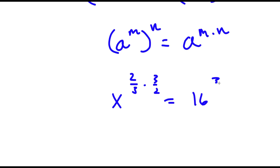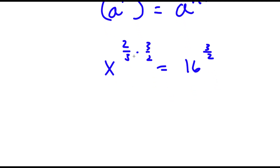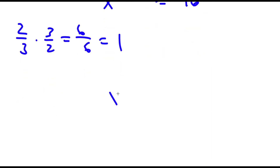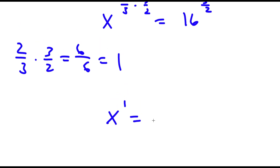This is equal to 16 to the power of 3 over 2. Now 2 thirds and 3 over 2, these two are reciprocals, meaning if we multiplied them we would get 1, because if you multiply two reciprocals you get 1. So let's test this out: 2 thirds times 3 over 2 — 2 times 3 is 6, and 3 times 2 is 6, so I have 6 over 6 which is equal to 1. So now I have x to the power of 1 is equal to 16 to the power of 3 over 2.